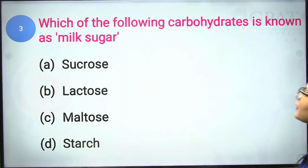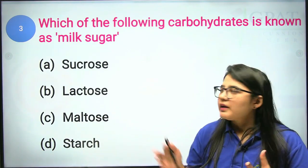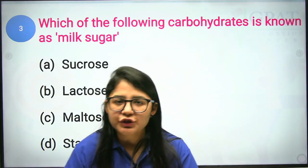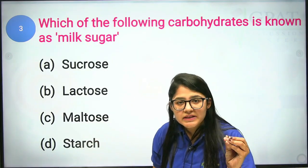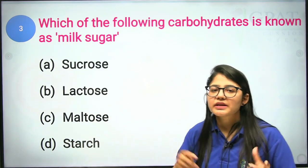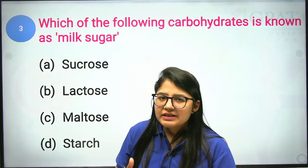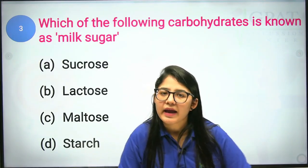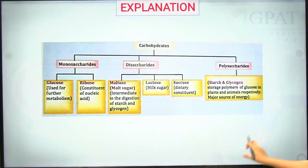The third question: which carbohydrate is known as milk sugar? Sucrose is the daily table sugar you take in your diet. Lactose is present in milk, that's why milk sugar is known as lactose. Maltose is malt sugar. Starch is the storage form present in plants and animals. The correct answer is lactose.